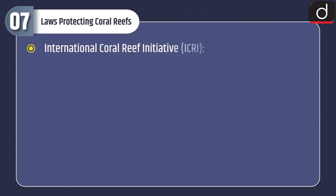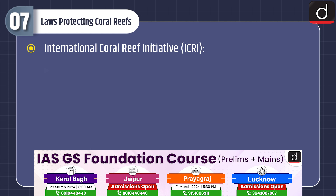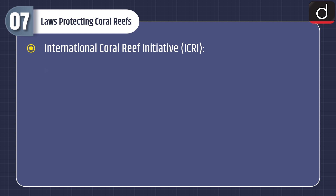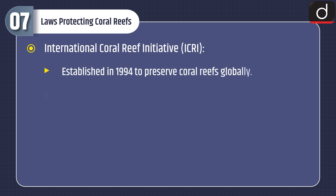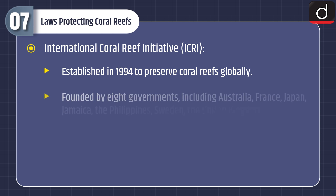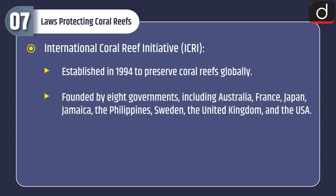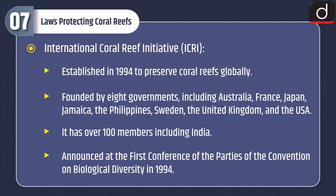Regarding laws protecting coral reefs: the International Coral Reef Initiative (ICRI) was established in 1994 to preserve coral reefs globally. It was founded by eight governments including Australia, France, Japan, Jamaica, the Philippines, Sweden, the United Kingdom, and the USA. It now has over 100 members including India, and was announced at the first Conference of the Parties of the Convention on Biological Diversity in 1994.